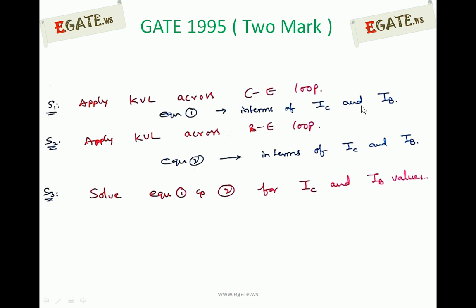You can use VCE saturation equal to 0.2 volts in the collector-emitter loop equation. Then apply KVL across the base-emitter loop for the second equation, again keeping IC and IB independent, and use VBE saturation equal to 0.8 volts. With two equations and two unknowns, calculate both IC and IB. The required answer is IC.